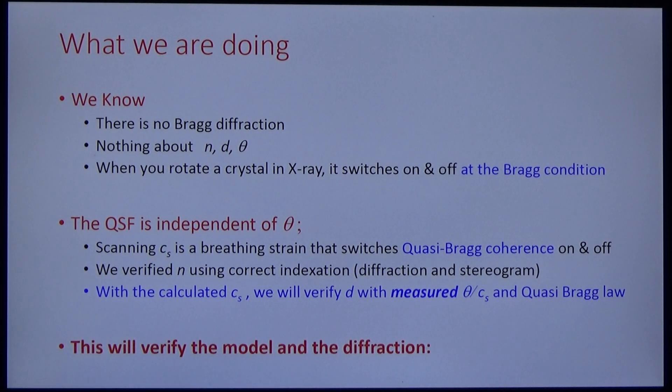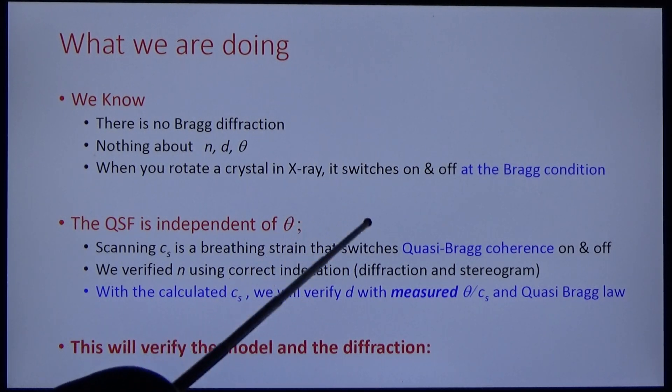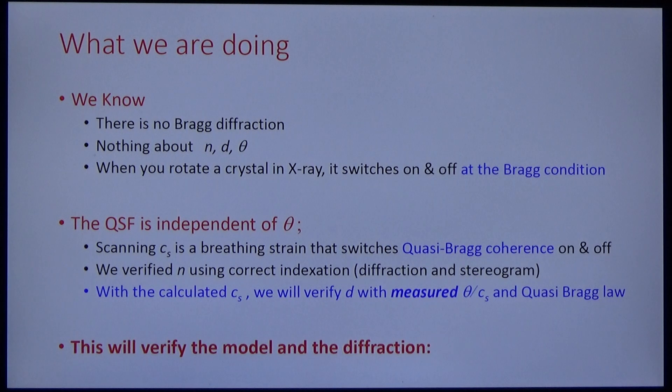So what do we do when we scan CS? We know, first of all, that there is no Bragg diffraction. We know nothing about the relations between D, N, d, and theta. We know nothing a priori. We know that when you rotate a crystal illuminated by an X-ray beam, the Bragg diffraction switches on and off suddenly at the Bragg condition. And we know also that the QSF is independent of theta. So what are those peaks that we plotted? CS is a breathing strain that switches the Bragg coherence on and off.